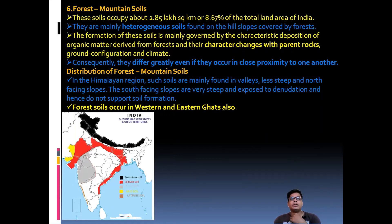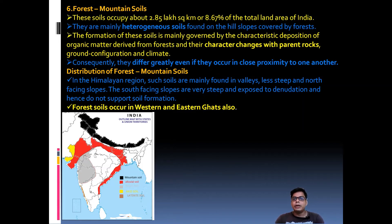The last soil type is forest or mountain soil. These soils occupy 2.85 lakh square kilometers, which is 8.67 percent of the total area. They are heterogeneous soils found on hill slopes covered by forests. Their formation is mainly governed by the deposition of organic matter derived from the forest, the character of the parent rock, ground configuration, and climate. Consequently, they differ greatly even when in close proximity.